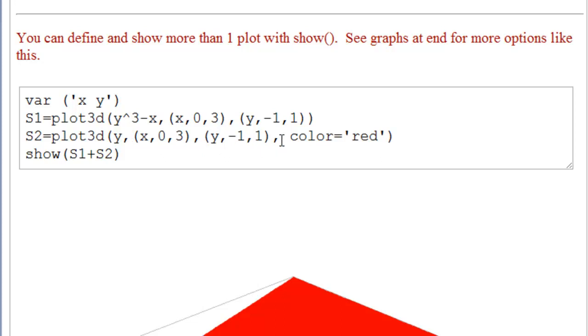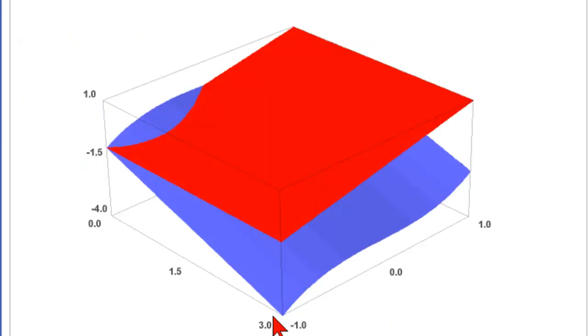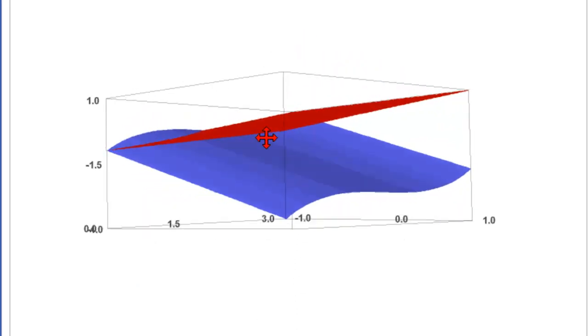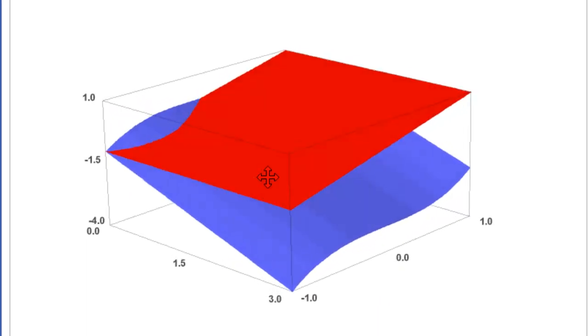Here we are using the option, comma, color equal to, quotations, red. And then in order to show both of these plots, we say show s1 plus s2. So this is the addition operator here. Let's see what this looks like. So the blue is our standard plot that we've used so far twice. And the red is the plane z equal to y. And, of course, we can rotate this to see it.